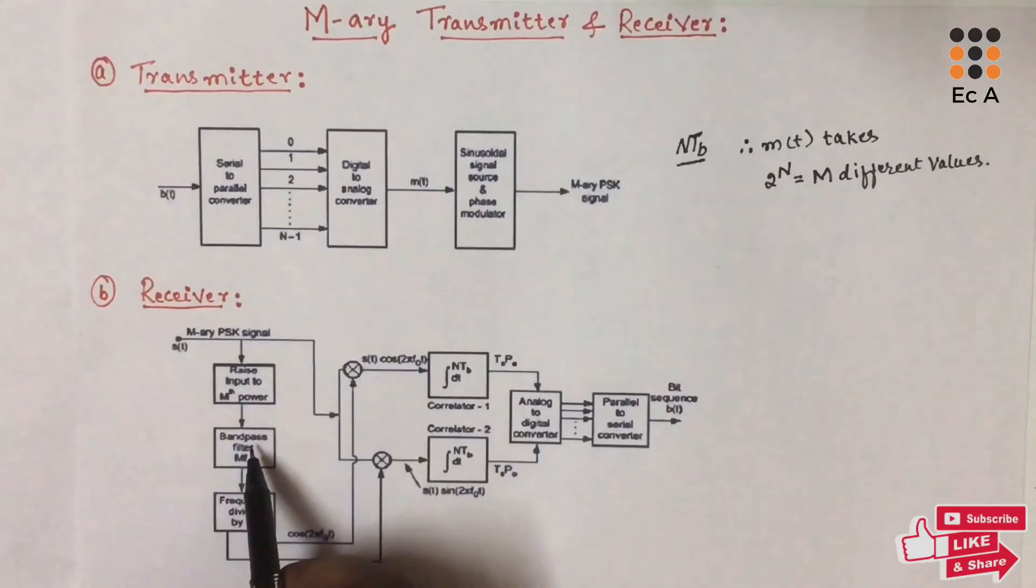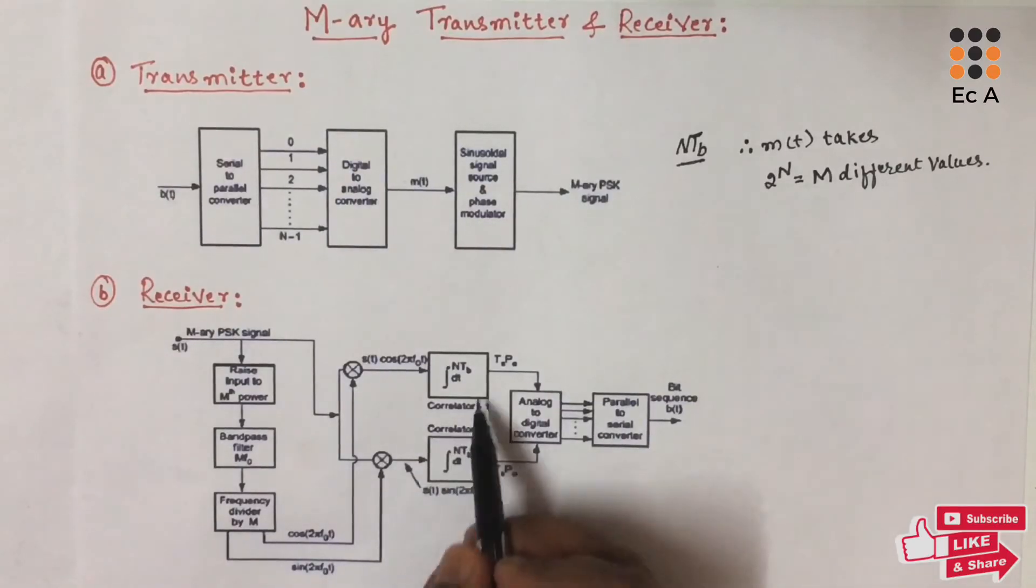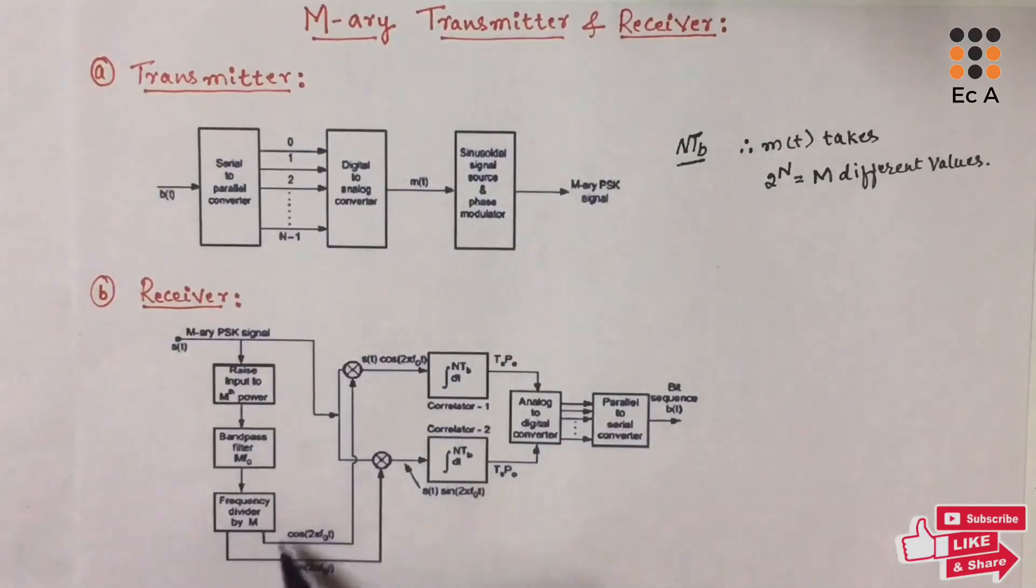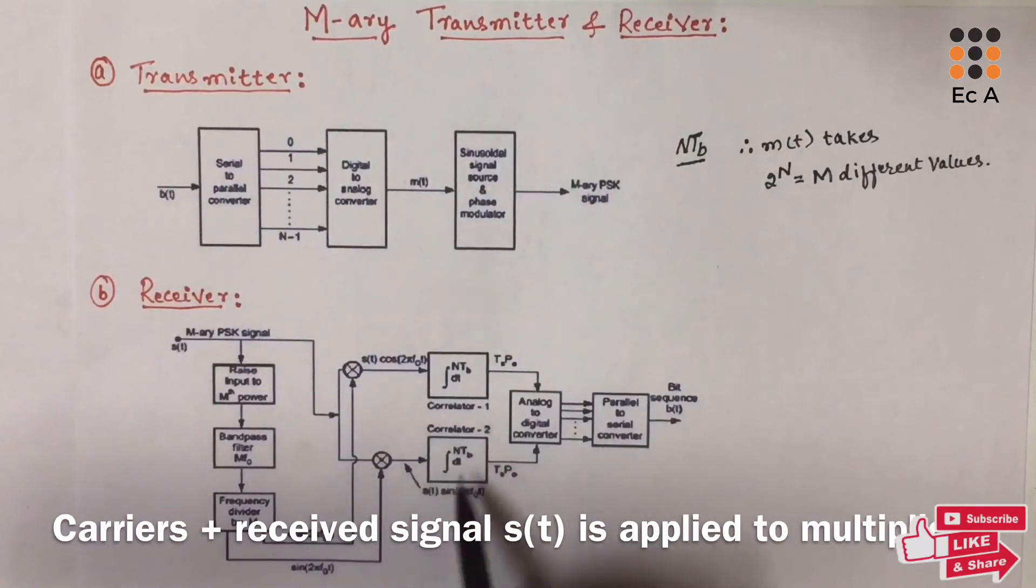Then, the bandpass filter extracts the frequency component MF0. The frequency is divided by M to obtain the carrier frequency F0. The coherent carriers are generated and they are applied to the correlators. The correlators consist of multiplier and integrator. The coherent carriers are first applied to the multipliers.